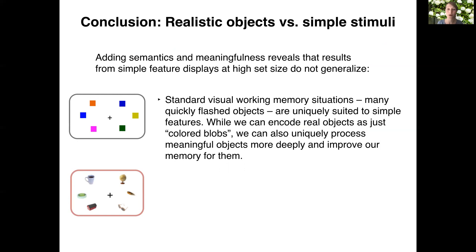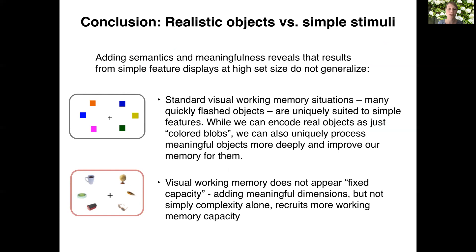And while we can encode real-world objects just as colored blobs, so the same way, we can also process meaningful objects more deeply and can improve memory for them. Most broadly, our results indicate that visual working memory does not appear fixed capacity. Adding meaningful dimensions, but not simple complexity alone, recruits more working memory capacity.